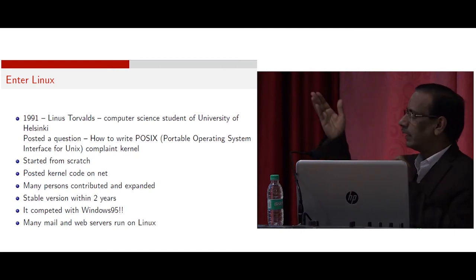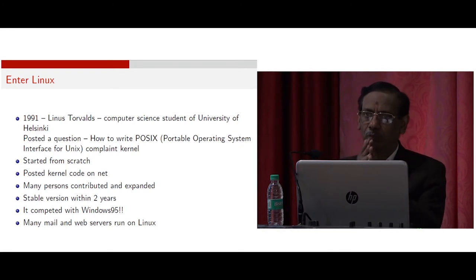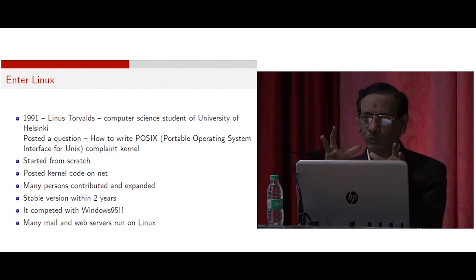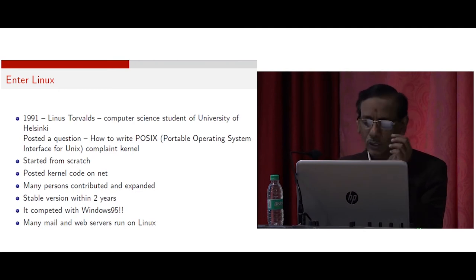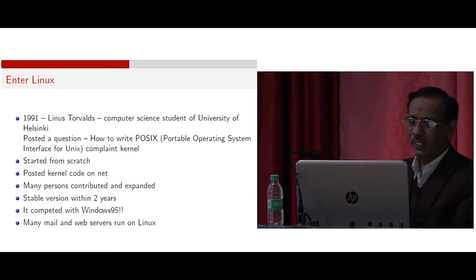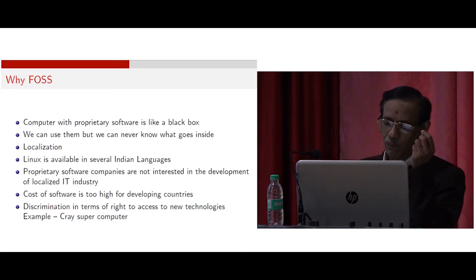In 1995, Windows launched its first Windows 95 operating system, integrating DOS and Windows — earlier DOS was separate and Windows 3.11 was separate, but in '95 the full Windows software became available. By that time, Linux software started giving competition to Windows. Nowadays, many mail and web servers — where we use our emails and all — are running on the Linux operating system.